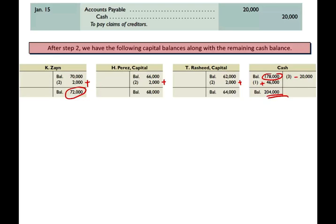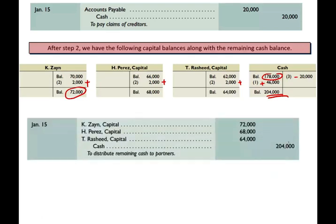Now we are ready to distribute the cash. Because there is no capital deficiency, each partner gets exactly their account balance. We credit cash and debit the capital of Zane $72,000, Perez $68,000, and Rashid $64,000 — bringing each balance down to zero. We debit all these accounts for the amount and everything closes to zero.